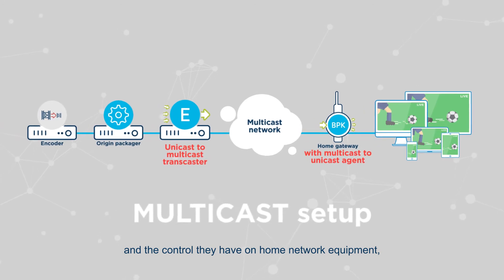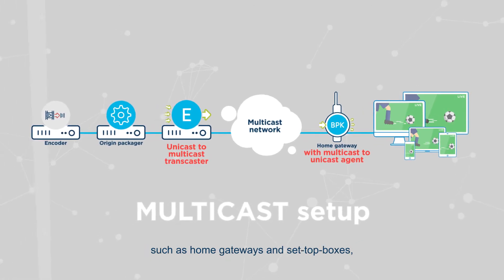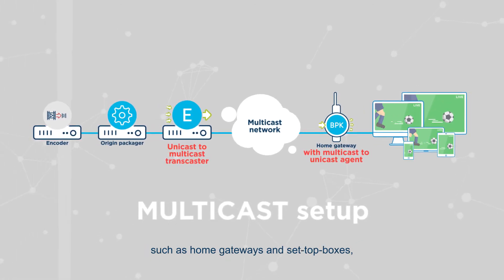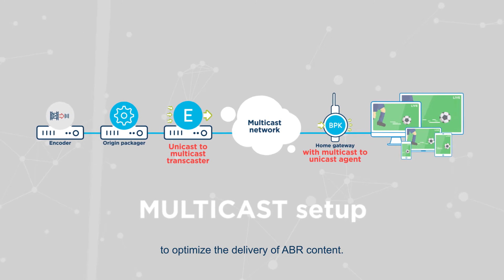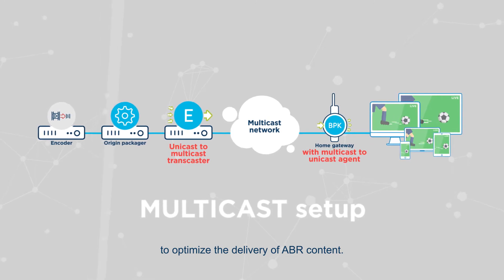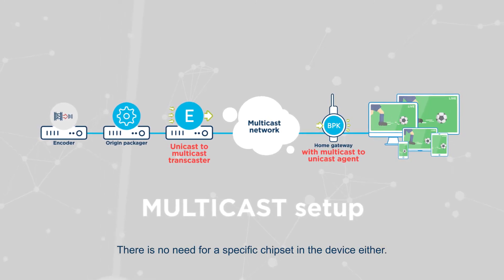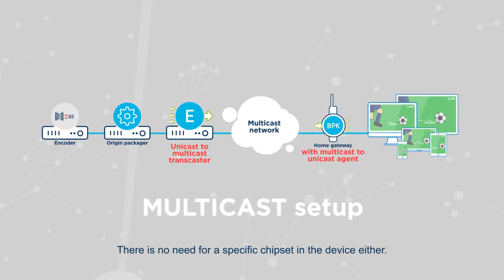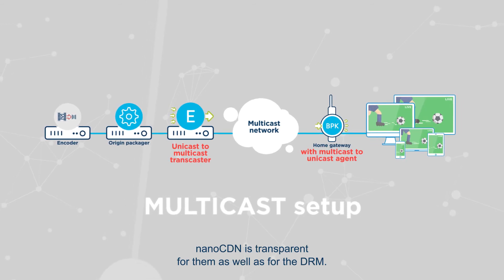Nano CDN allows operators to leverage the multicast capability of their networks and the control they have on home network equipment such as home gateways and set-top boxes to optimize the delivery of ABR content. There's no need for a specific chipset in the device either — nano CDN is transparent for them, as well as for the DRM.